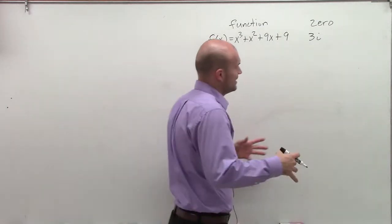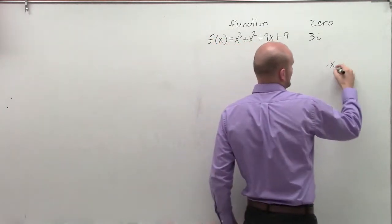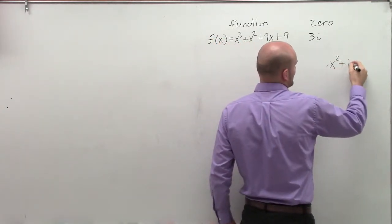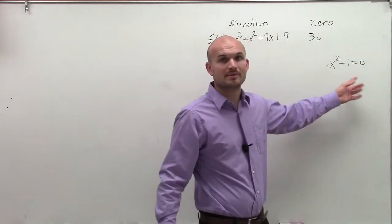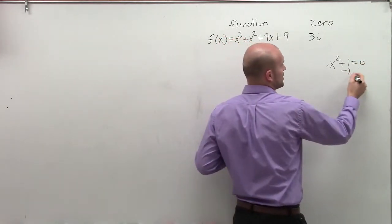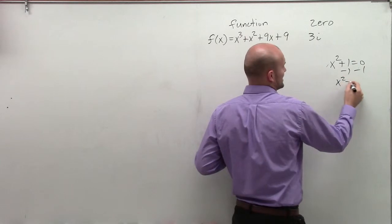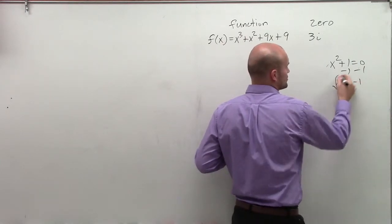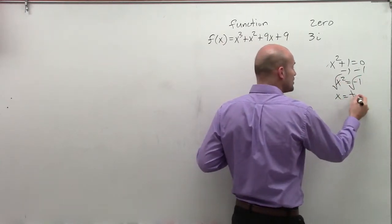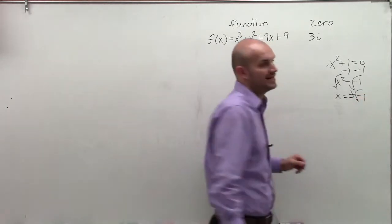So remember, ladies and gentlemen, when I'm solving, we talked about complex numbers, x squared plus 1 equals 0. When I want to solve for x, I subtract 1. I get x squared equals negative 1. Square root, square root, x equals plus or minus the square root of negative 1.